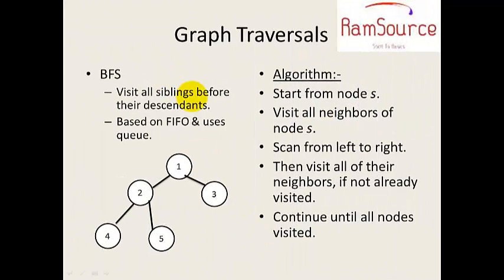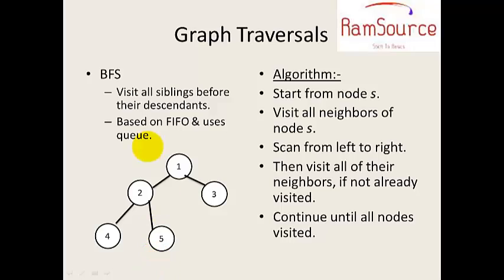Next is traversal. There are two methods: BFS — Breadth First Search — and DFS — Depth First Search. In BFS, you traverse the graph breadth first, level by level, visiting all nodes at the current level before moving to the next.